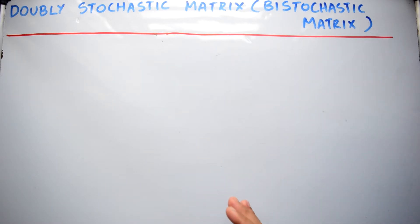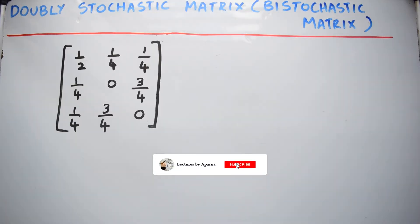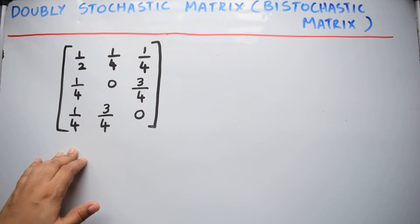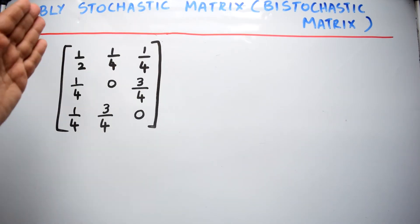Another name for doubly stochastic matrix is bistochastic matrix. Consider a matrix like this. Here, if you add the elements in each row and each column, you will get the sum 1.